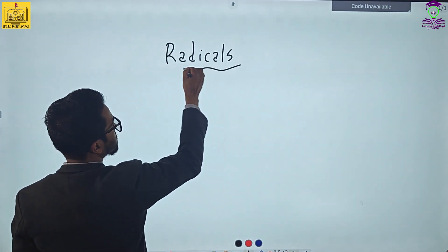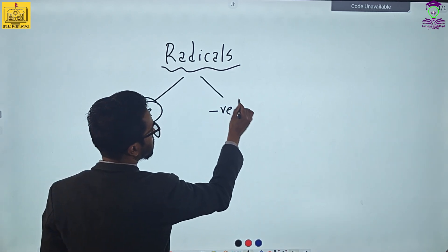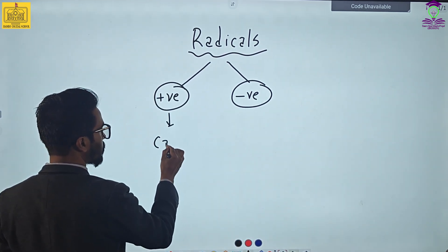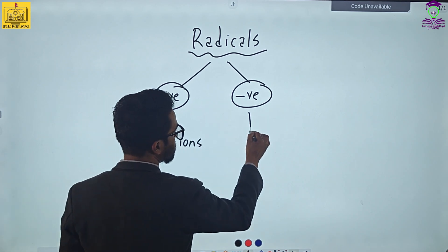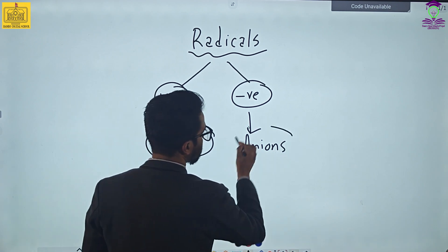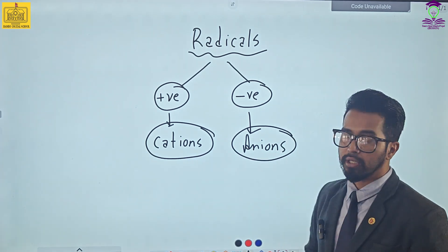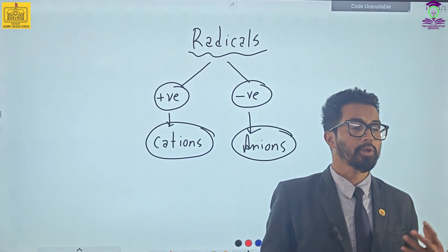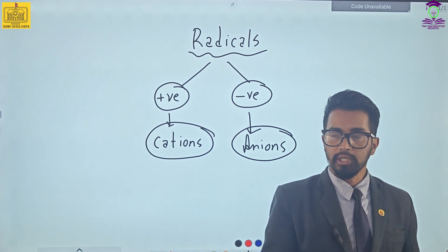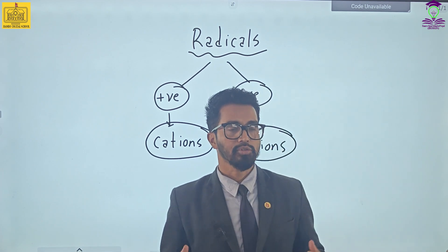Radicals are charged particles divided into two parts: the positive part and the negative part. If we talk about radical types, these positive parts are also known as cations, and the negative parts are known as anions. So these are categorized especially into cations and anions. Now we will divide the section into cations and anions and make a chart, then try to remember the important parts that are useful in your exam and how you are going to combine them to form chemical compounds.